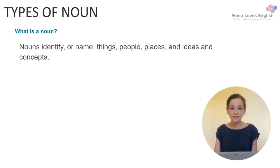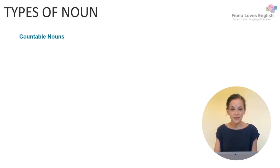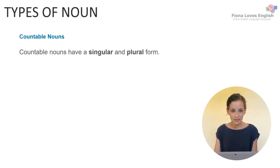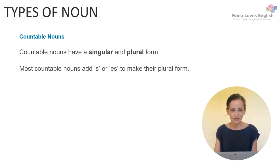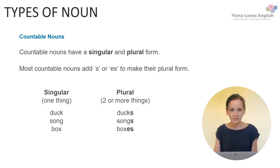So nouns identify or name things, people, places and ideas and concepts. We saw that countable nouns have a singular and a plural form. Most countable nouns simply add S or ES to make the plural form. For example, duck becomes ducks, song becomes songs, and box becomes boxes.